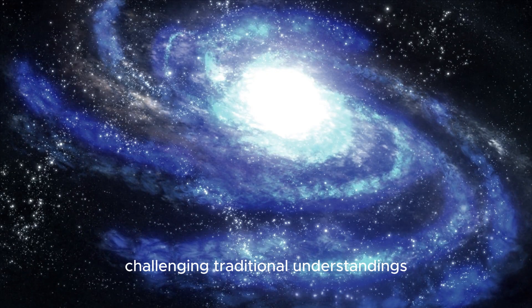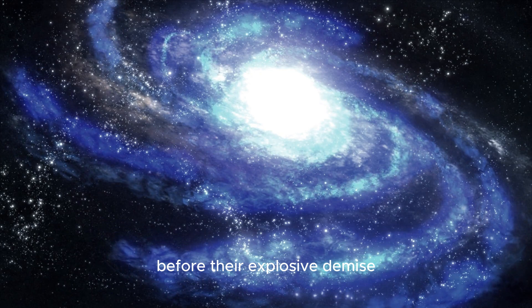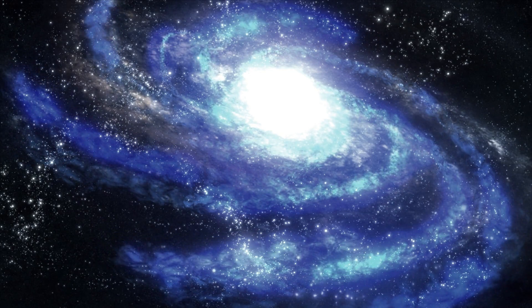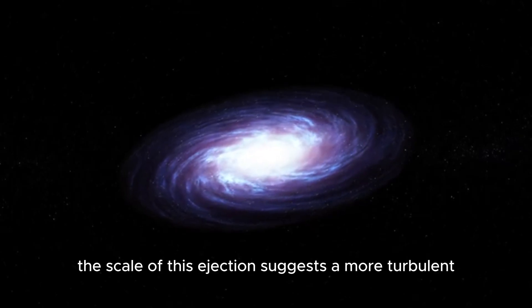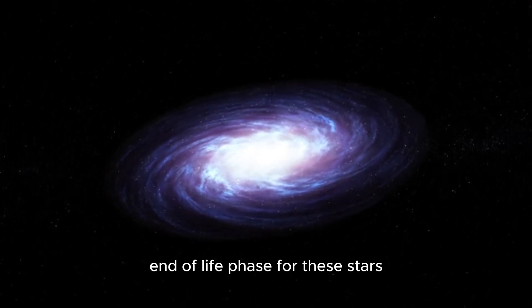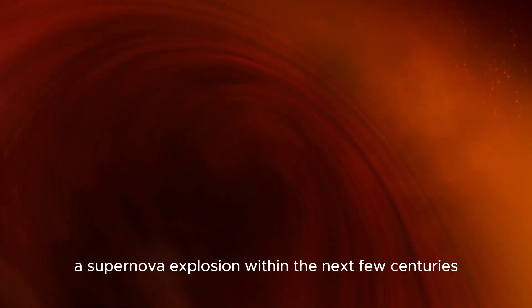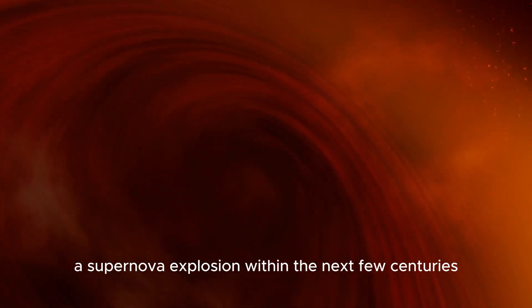Challenging traditional understandings that red supergiants shed mass at a steady rate before their explosive demise. Instead, the scale of this ejection suggests a more turbulent and potentially erratic end-of-life phase for these stars. Could Betelgeuse be gearing up for its grand finale, a supernova explosion, within the next few centuries?